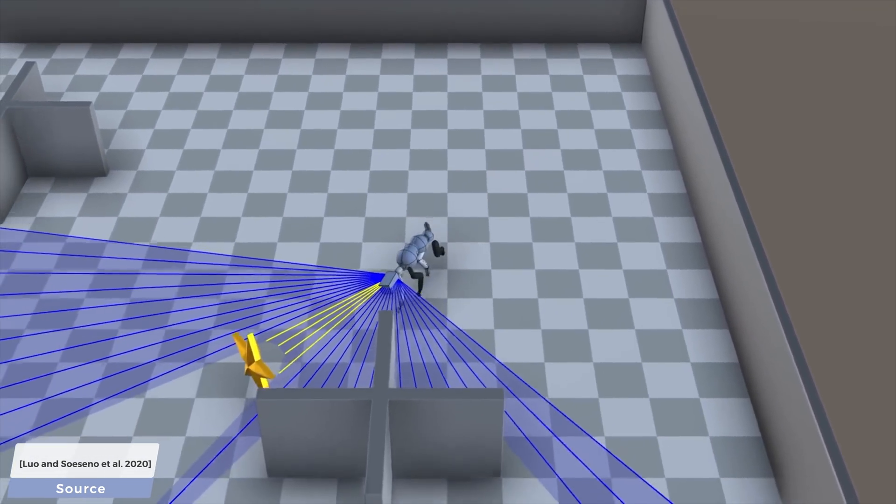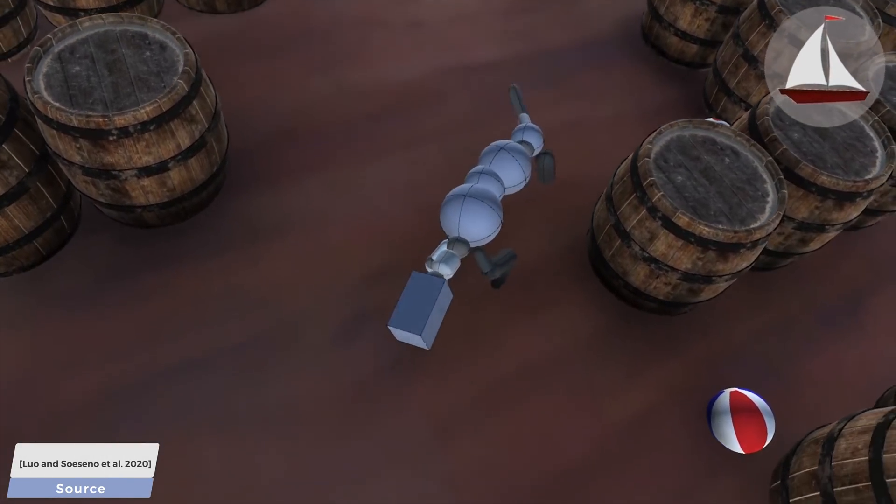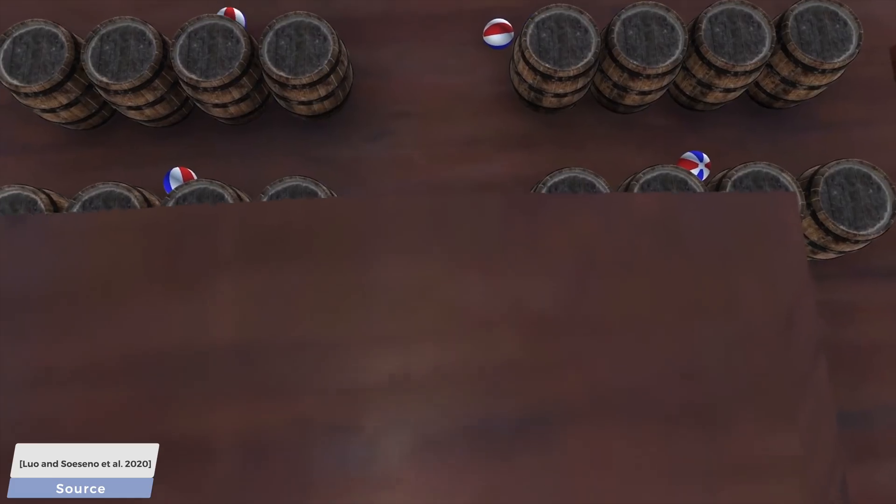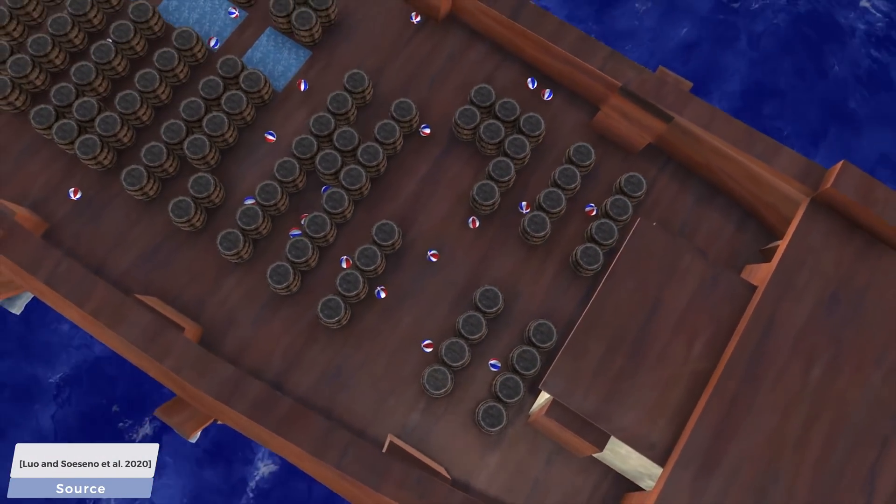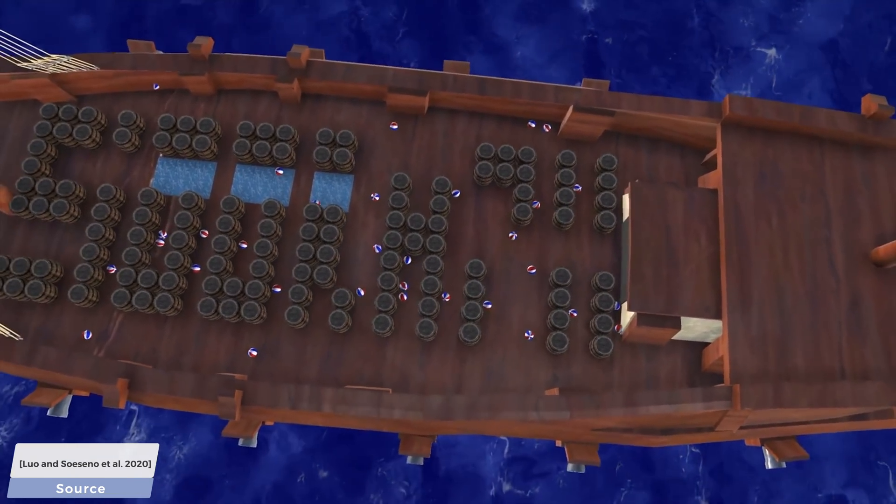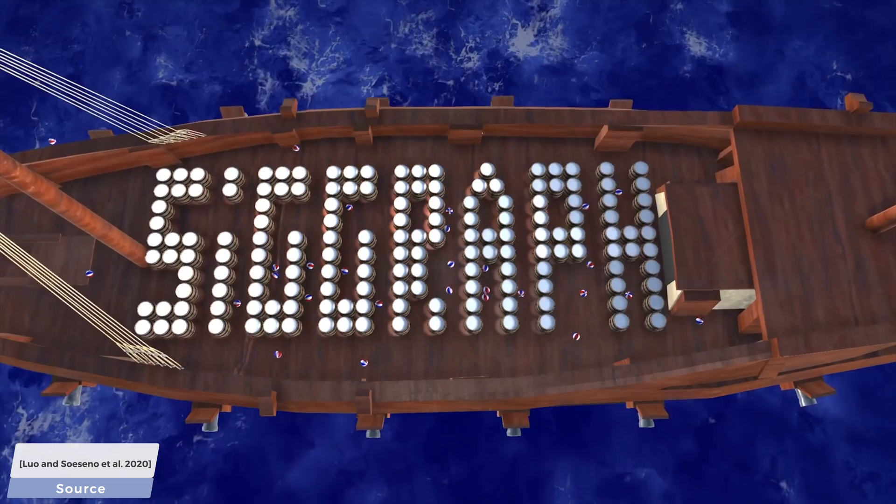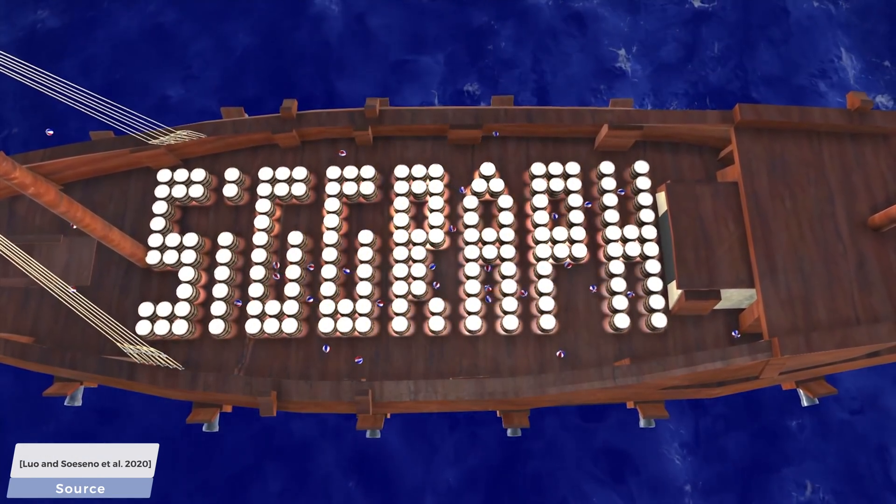So this quadruped behaves according to physics, lets us control it with the controller, which is already somewhat of a contradiction. And it is robust against these perturbations at the same time. This is absolute witchcraft, and no doubt, it has earned to be accepted to SIGGRAPH, which is perhaps the most prestigious research venue in computer graphics. Congratulations!